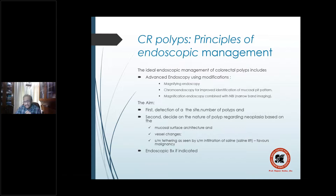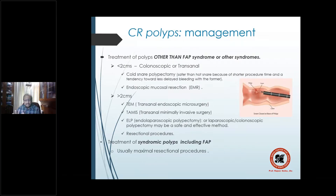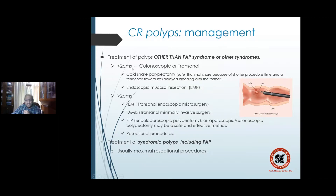For polyps likely non-neoplastic and less than 2 cm, colonoscopic or transanal removal is used — cold snare polypectomy, hot snare using cautery, or endoscopic mucosal resection (EMR). Cold snare polypectomy is preferred. A snare loop is pushed in and tightened to snare the polyp.